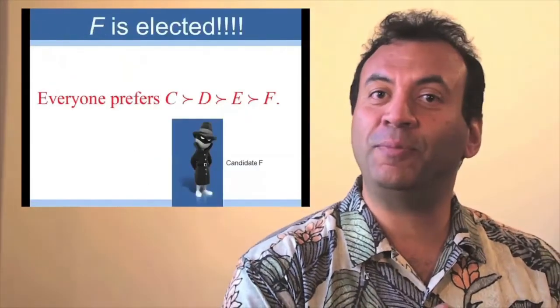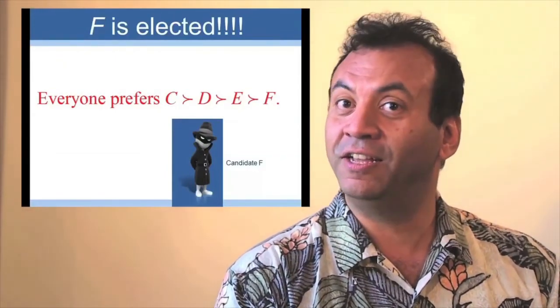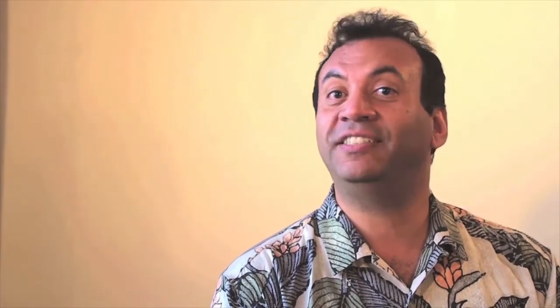Isn't that interesting? Everybody preferred C to D to E to F, yet we were able to construct a logic by which F was elected. This example just shows the importance of getting the logic right, or even if we think about the other elements of decision quality, we could still make a bad decision.